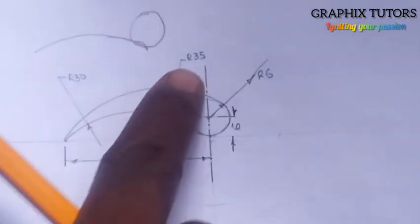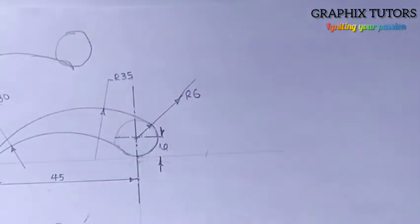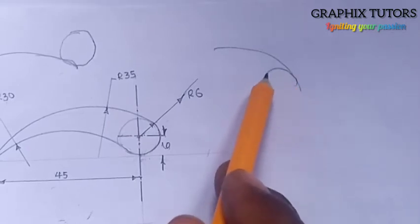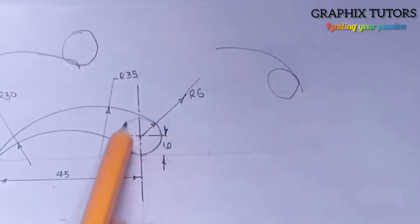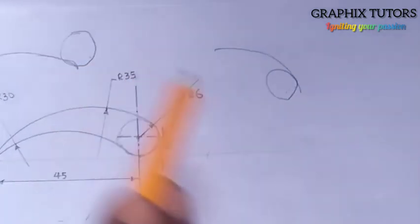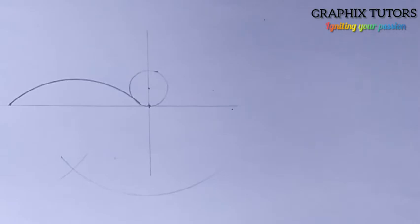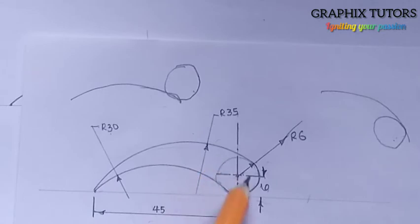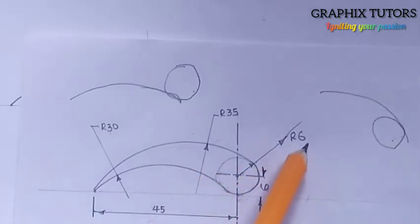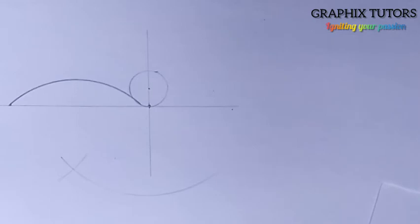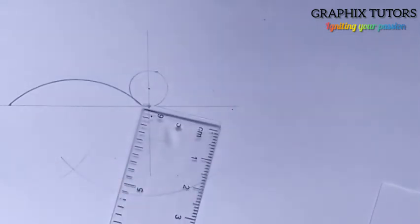Now the second arc — the upper one — has a radius of 35. But notice: the circle is inside this arc. That is internal. For internal you subtract. So the radius of that arc is 35 minus the radius of this circle which is 6: 35 minus 6 equals 29. I'll use my ruler and measure 29 on my meter rule.